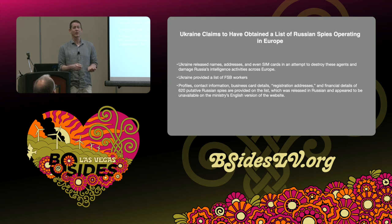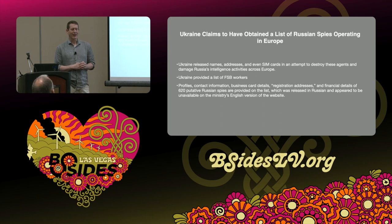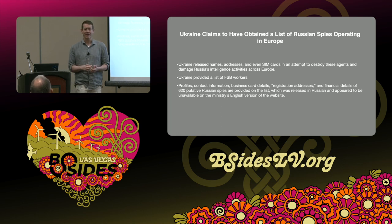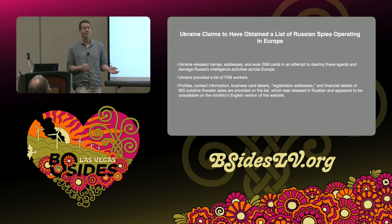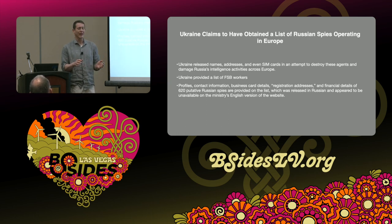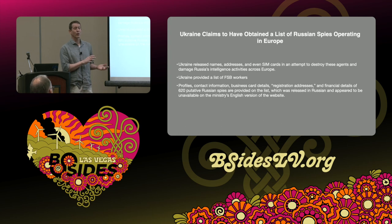Ukrainian researchers used fake Tinder profiles for social media elicitation on Russian soldiers — gathering troop movements and morale information. Leading up to the conflict, Ukraine also released a list of roughly 600 FSB or SVR officers to the world — names, phone numbers, all personal information. Whether or not they were actually intelligence officers, they've now been named, so locals won't deal with them. This effectively neutralized Russian intelligence collection operations in the area.